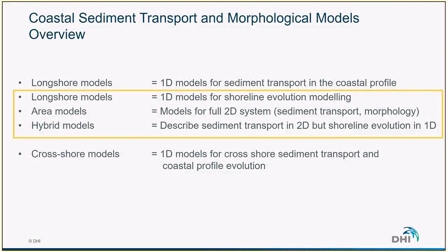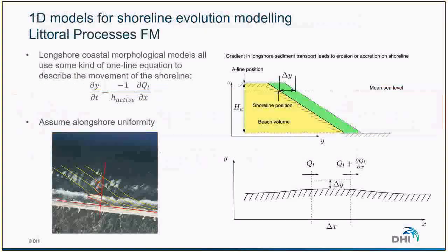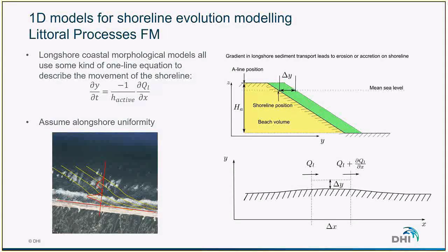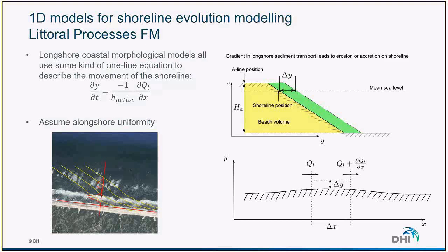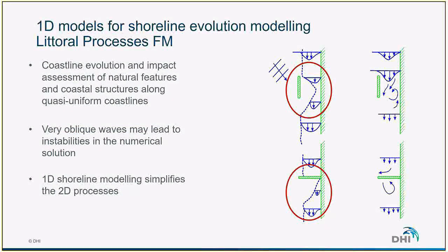We will now move on to shoreline evolution modeling in one dimension, and then look at area models and hybrid models. This model concept relates to longshore sediment transport. When we look at a stretch of coast, we look at what sediment is arriving and what is leaving — described by an equation relating the variation in the cross-shore position of the shoreline to the gradient in sediment transport over the height of the active depth. This model works well for relatively simple cases and quasi-uniform coastlines.